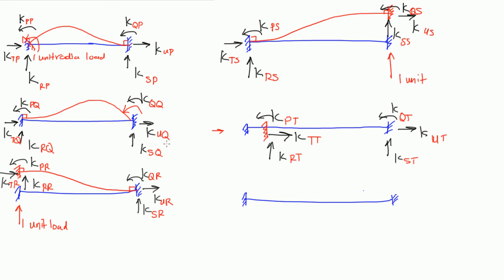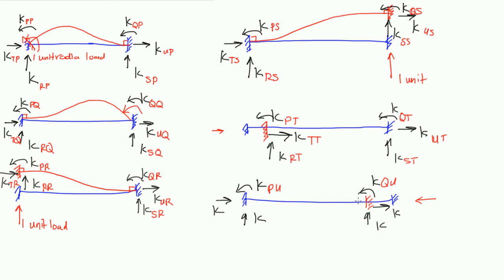Finally, for the last case, we apply a one unit horizontal load on the right side at U, pushing the beam in and compressing it. Again there's going to be a rotation at each end, verticals at each end, and horizontals at each end — all labeled K. The reactions are K_PU, K_QU, K_RU, K_SU, K_TU, and K_UU, with U indicating the location of the disturbance.